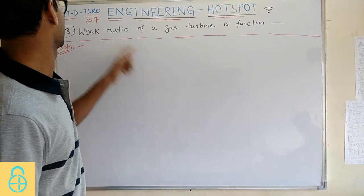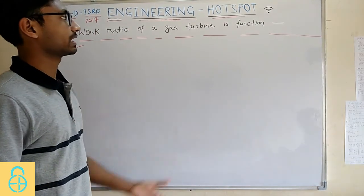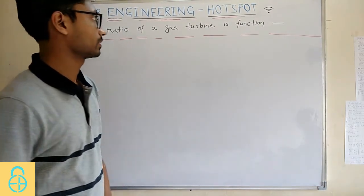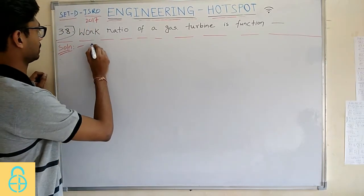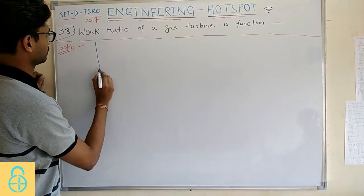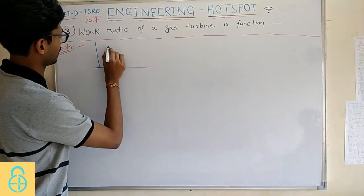In this problem they wanted to know the work ratio of a gas turbine is a function of what. They have given 4 options, you can check the paper. But let me solve how to handle this problem.